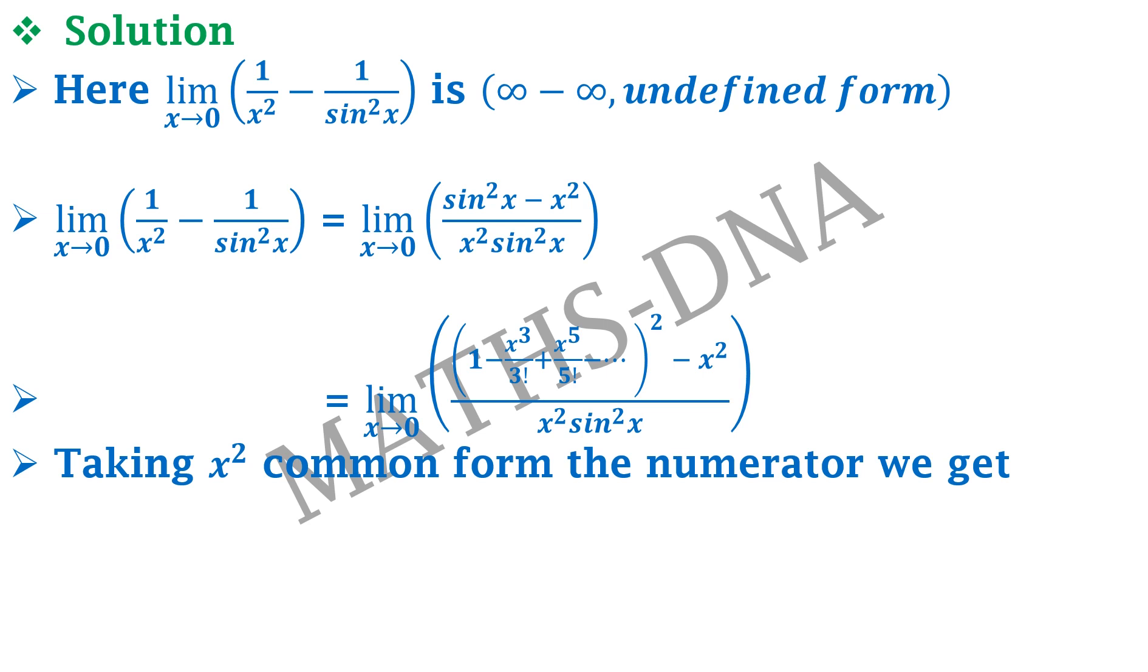Moving on, taking x square common from the numerator, so we get limit x tends to 0, x square into 1 minus x square upon 3 factorial plus x raise to 4 upon 5 factorial whole square minus 1.